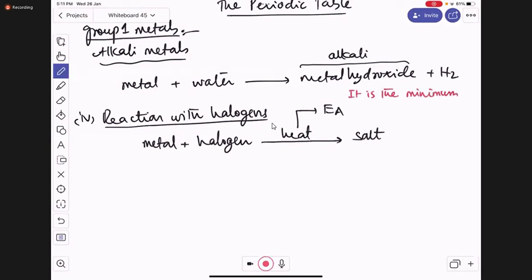Energy of activation is the minimum amount of energy required for reactants to convert into products. This normally carries one or two marks in the paper.